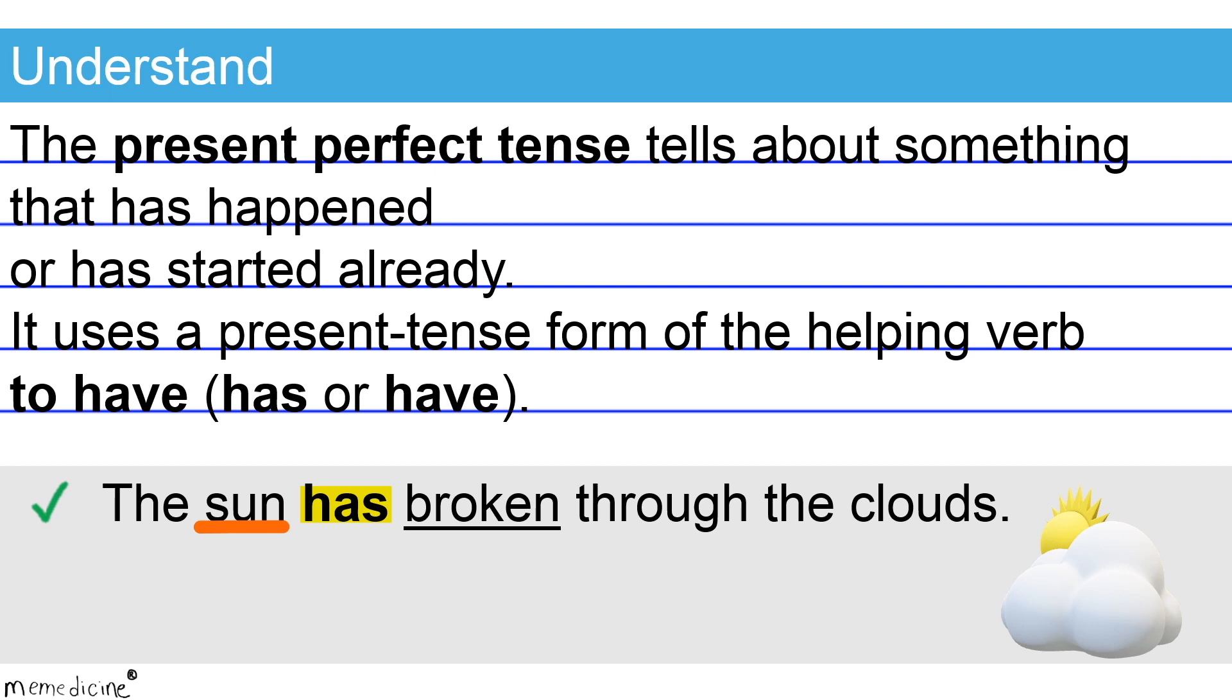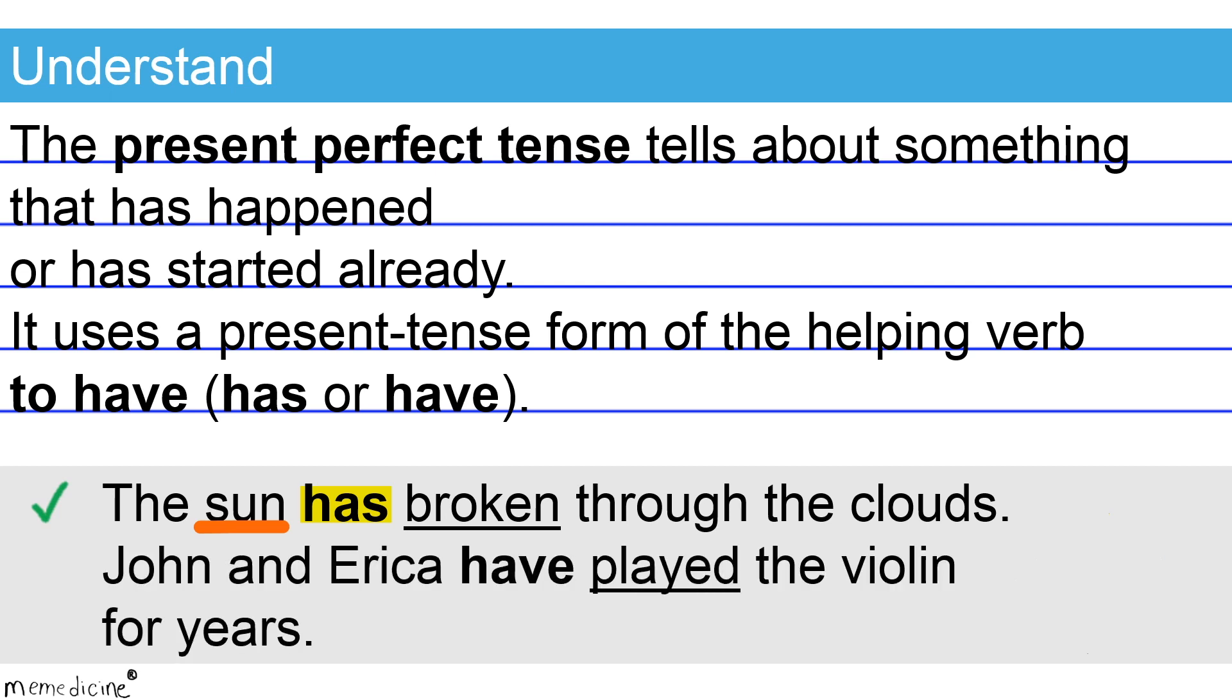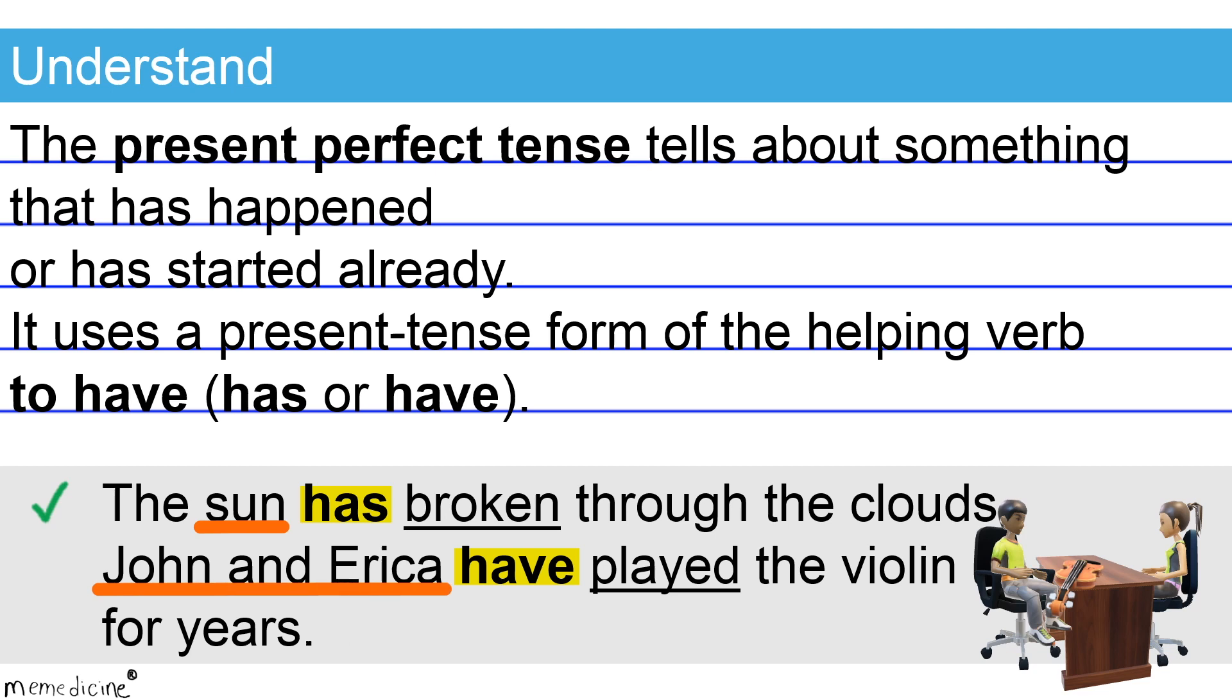Now check out another example. John and Erica have played the violin for years. Note here that have is the present tense form of the verb to have that is paired again with I, you, we, and all plural subjects. Here our plural subject is John and Erica. So the present perfect tense have played correctly corresponds to its plural subject John and Erica.